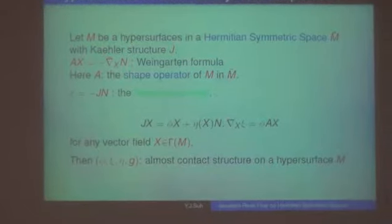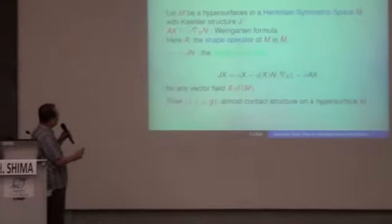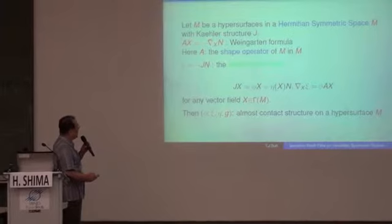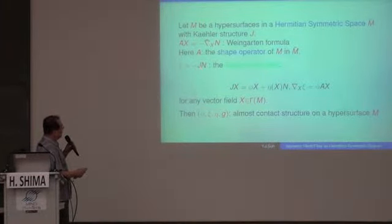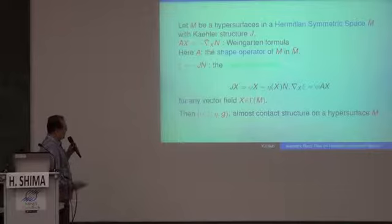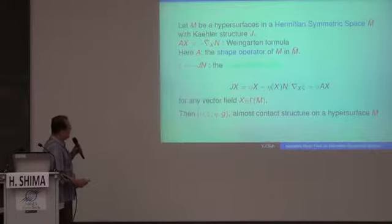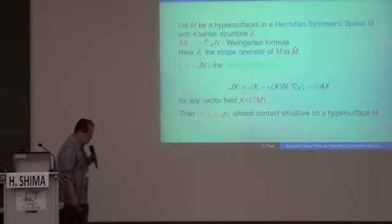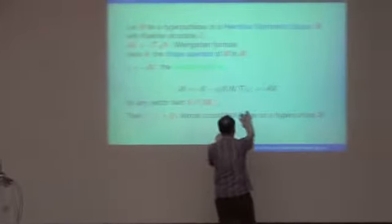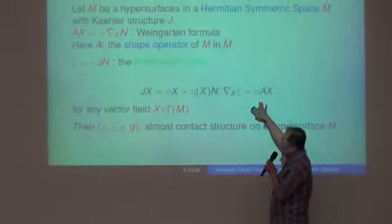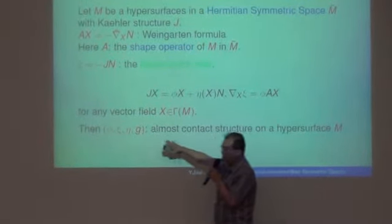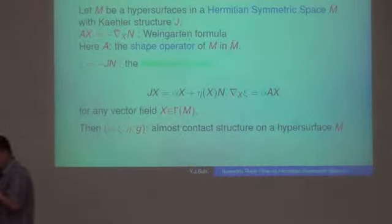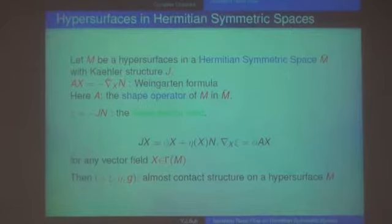And A is the shape operator — it appears frequently in my work. Now let us write the Kähler structure transformed by the Kähler structure. This we call the Reeb vector. Moreover, we can transport this Kähler structure from the ambient space, and the tangential part of J·N is given by this, and the normal part is this one. When we differentiate the Reeb vector, it is given elementarily like this. This structure is called the almost contact structure for hypersurfaces in Hermitian symmetric space.